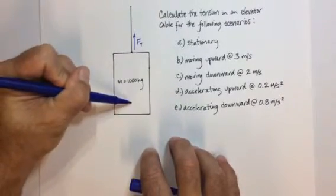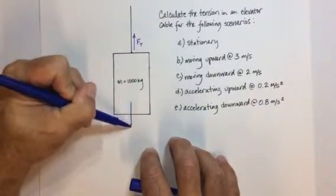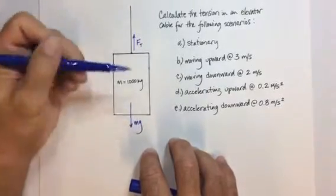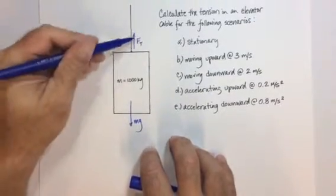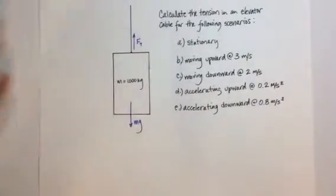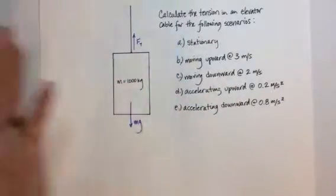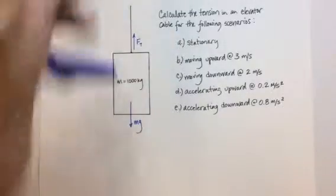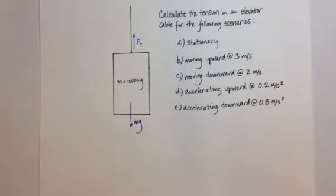The down force in this case is always going to be mg. The up force is going to be the tension cable, and there are no other forces on this — nothing moving it or accelerating it in either horizontal direction. It's only a vertical scenario, so we're only going to consider the vertical.